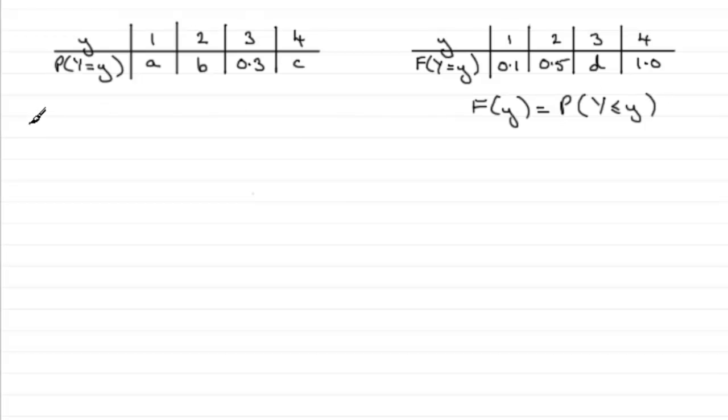And so we can use this to get a, for instance. So if we're talking about finding a, then we know that F(1) represents the probability of Y being less than or equal to 1.